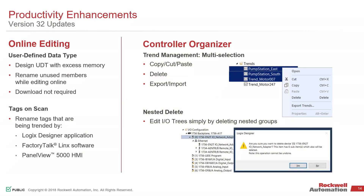A couple of new enhancements for productivity in V32 include some online editing features. We're getting one step closer to being able to edit user-defined data types while online. We can't do a full edit; however, we can now rename different members of the UDT while online. The idea is you would create your UDT with spare members inside that you're not necessarily using. You can then rename those unused ones while online — so you'd create some spares, and later on if you need to make changes while online, you could rename and start using one of those spare members without having to go offline and do a download.